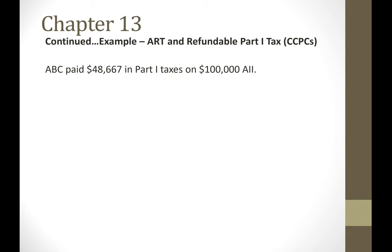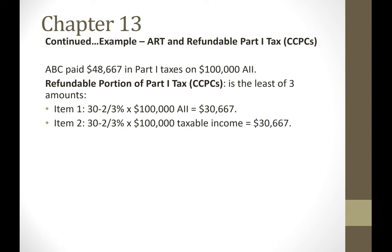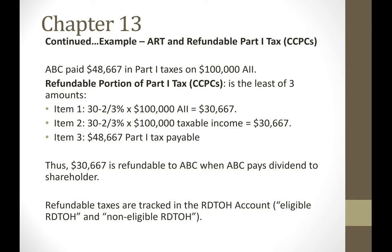The amount they get back is the refundable portion of the Part 1 tax, calculated as the lesser of three amounts. The first: 30 and two-thirds percent times the AII — $30,667. The second: 30 and two-thirds percent times taxable income minus the small business deduction. Because ABC only earned aggregate investment income there's no small business deduction, so this is also $30,667. The third: Part 1 tax payable, which was $48,667. The lesser of the three amounts is $30,667 — that's the maximum ABC will get back when they pay a dividend to Sally. This amount is added to the RDTOH account — the refundable dividend tax on hand.